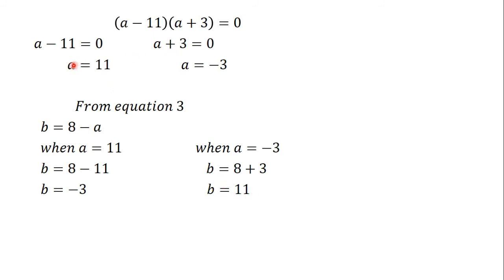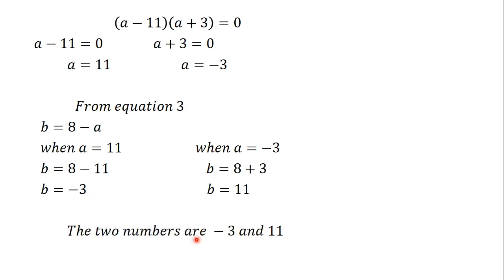So when a equals 11, b equals negative 3, and when a equals negative 3, b equals 11. This means the two numbers we are looking for are negative 3 and 11. We can verify: negative 3 times 11 equals negative 33, and negative 3 plus 11 equals 8 — both conditions from the question are satisfied.